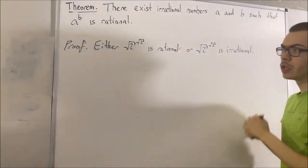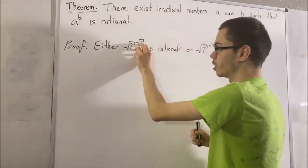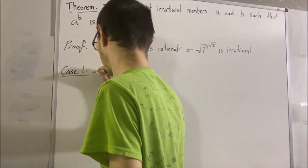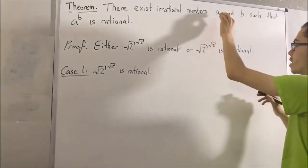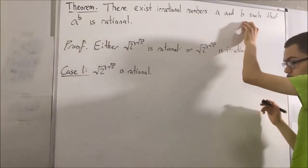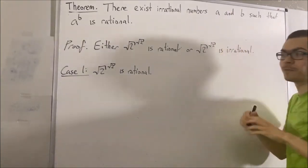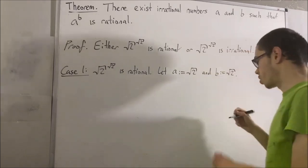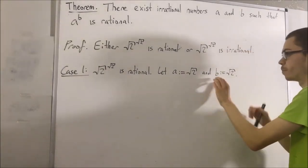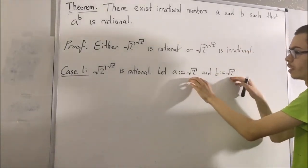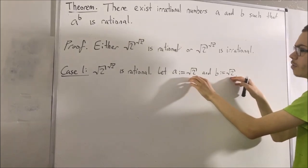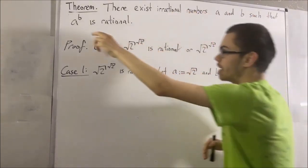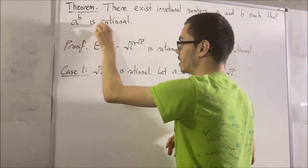So let's consider case one where square root of 2 to the power of square root of 2 is rational. Let's choose a and b to both be equal to the square root of 2. We want to show that a and b are irrational, and a to the power of b is rational.